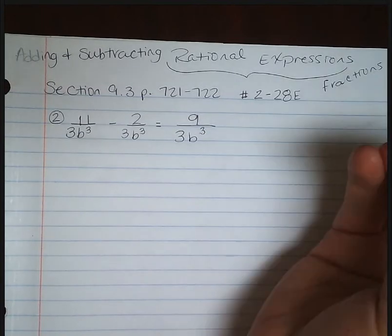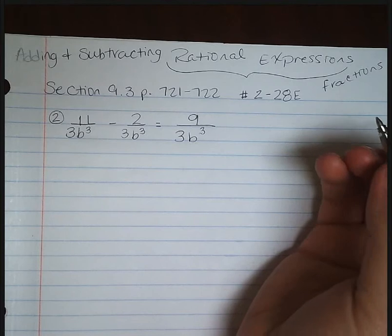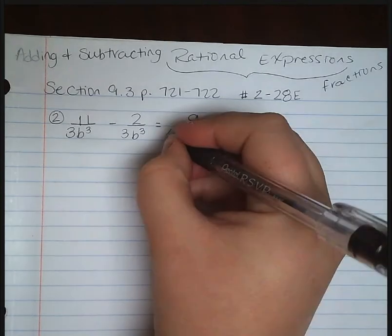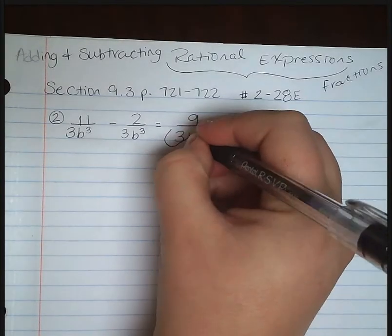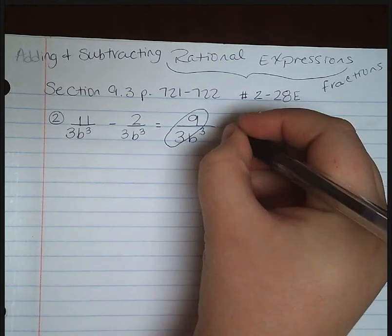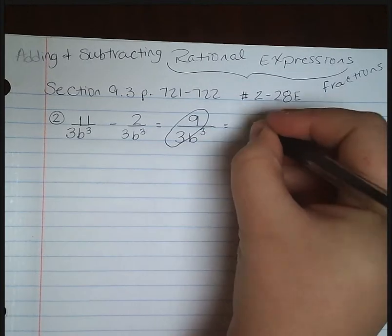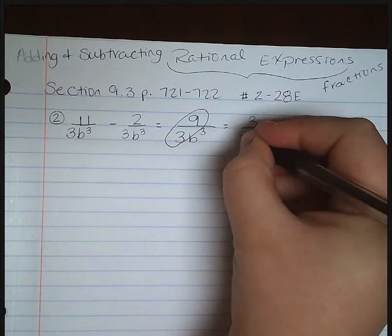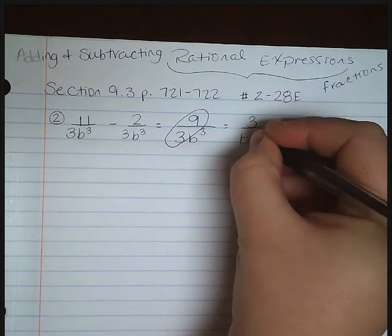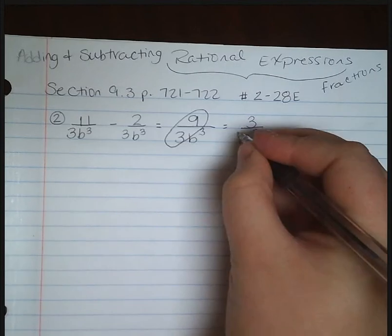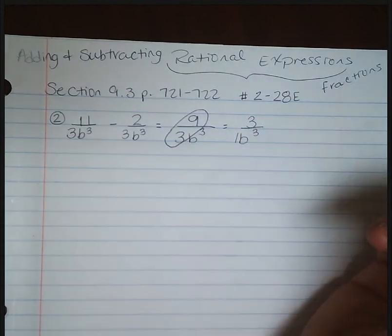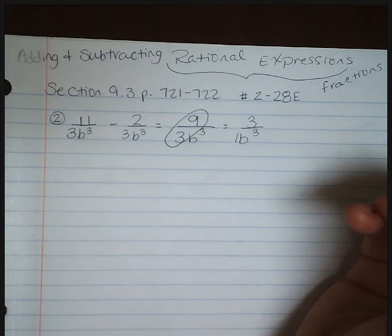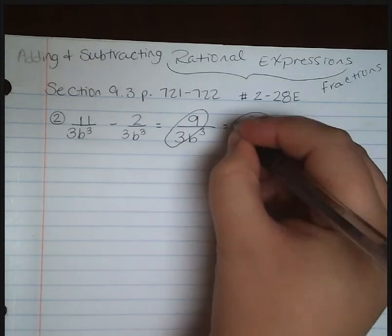Remember, they did tell us to simplify our results. So that 9 and that 3 can simplify to give us a 3. If you want to write the 1 in front of the b to the 3rd then you can, but you do not have to. So your answer here would be 3 over b to the 3rd power.